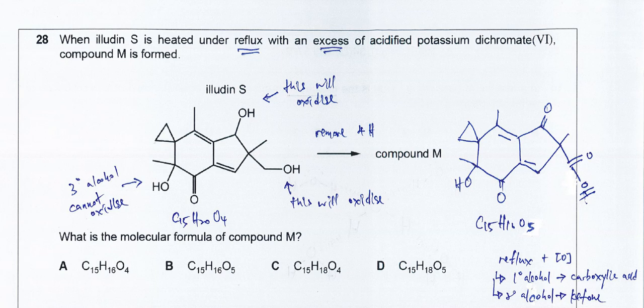Welcome to TMKL Chemistry channel. For this question, the compound is refluxed with excess of potassium dichromate. From here we know that the double bond is not going to form a diol, and only primary and secondary alcohols will be oxidized.